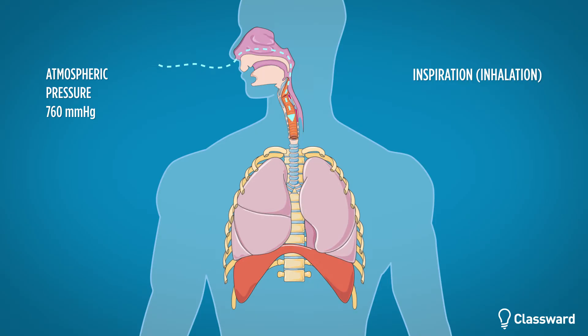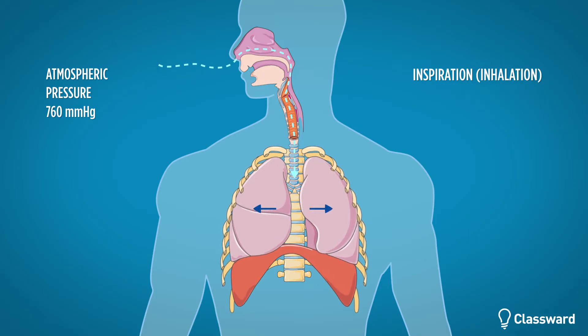During inspiration, the intercostal muscles will contract and move outward. The diaphragm will contract and move downward. Notice how this increases the volume in the thoracic cavity, and subsequently lowers the pressure inside.